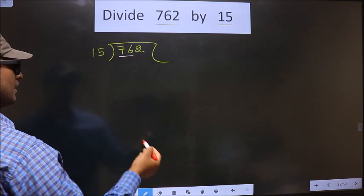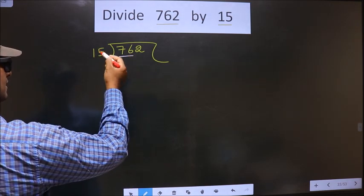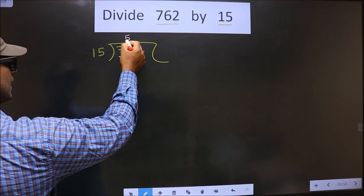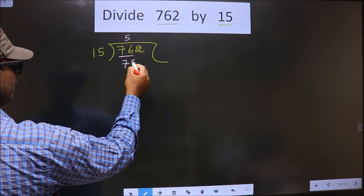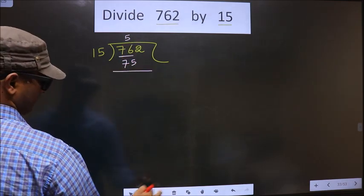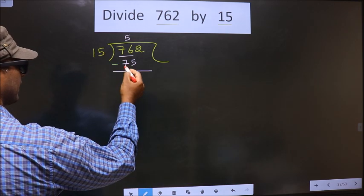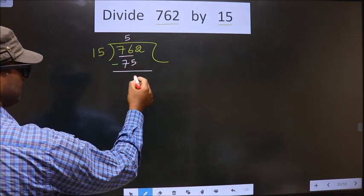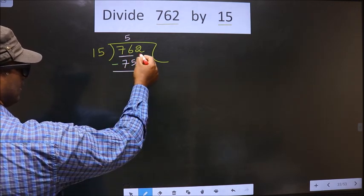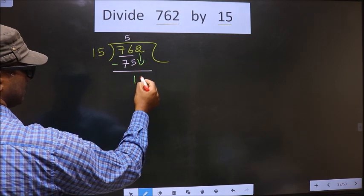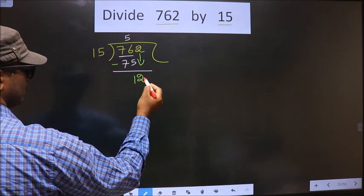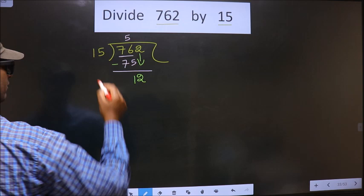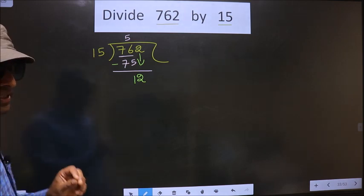A number close to 76 in the 15 table is 15×5=75. Now we subtract: 76 minus 75 is 1. Now you bring the number beside it down, making it 12. 12 is smaller than 15.